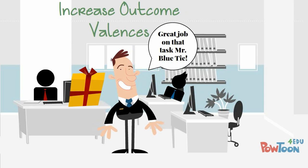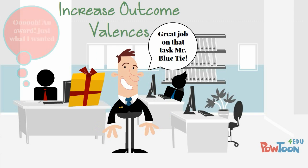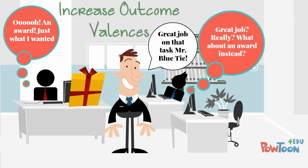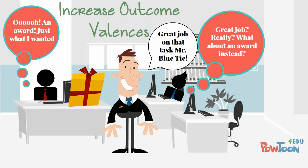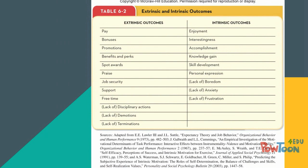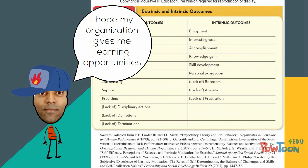Third, increase outcome valences by ensuring that rewards are valued. We only used two outcomes in our example, and Tony may value other rewards besides pay and promotion. Consider the following table — employees attach importance to a host of other outcomes. Managers should therefore ensure that they use rewards consistent with individuals' values. This may mean individualizing rewards.